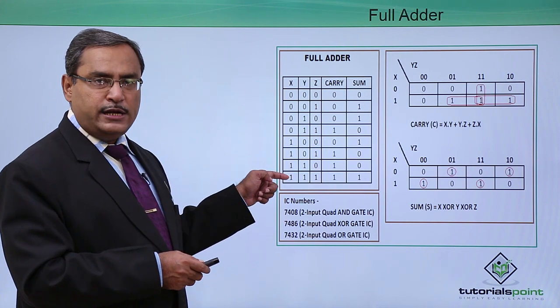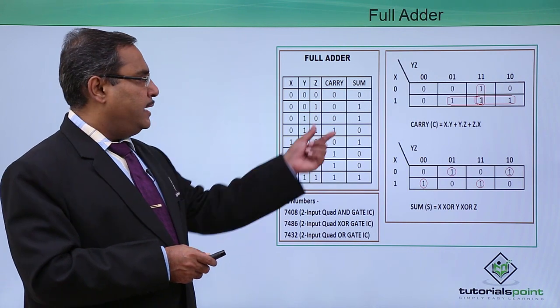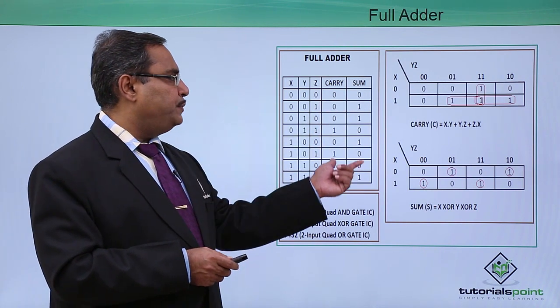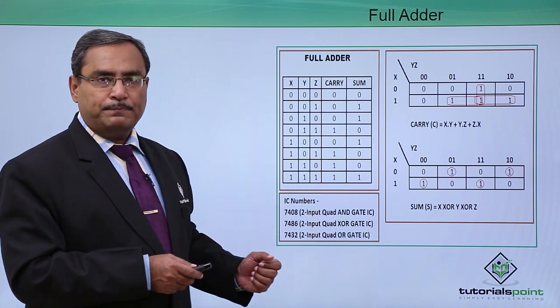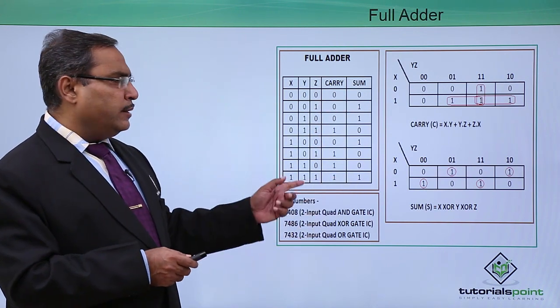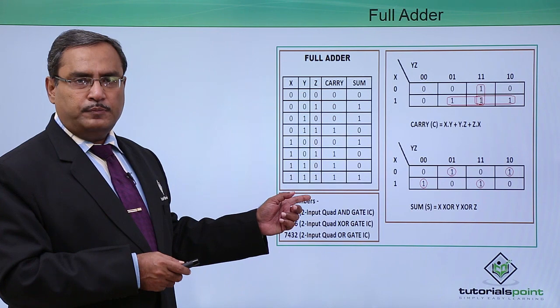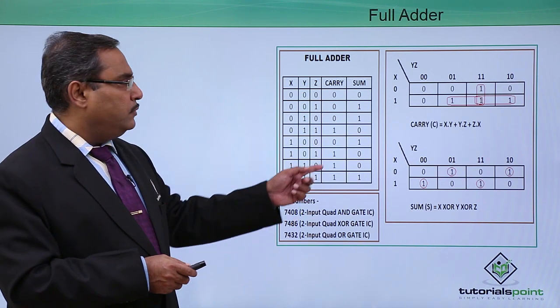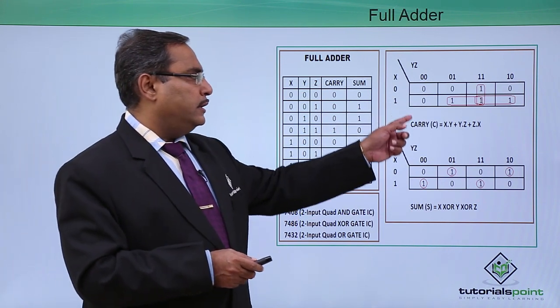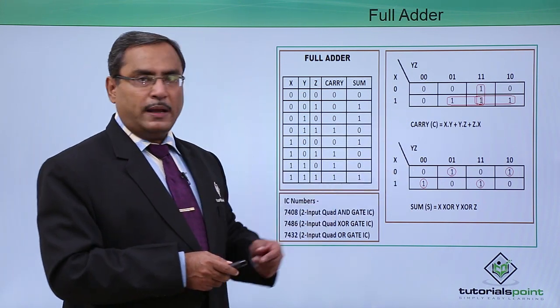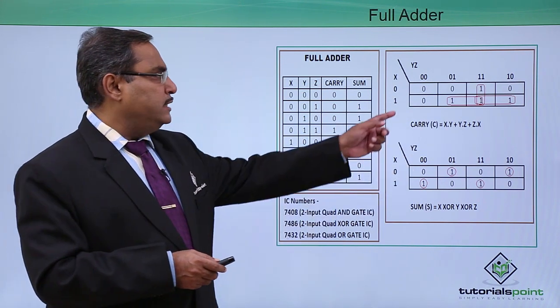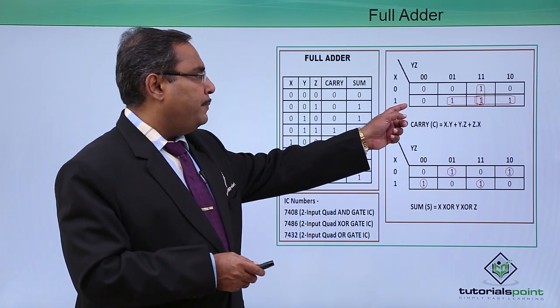In this way we are having eight combinations and we have the respective carry and sum. To get the Boolean function of carry and sum, we have plotted the respective Karnaugh maps. This is the Karnaugh map we are having.